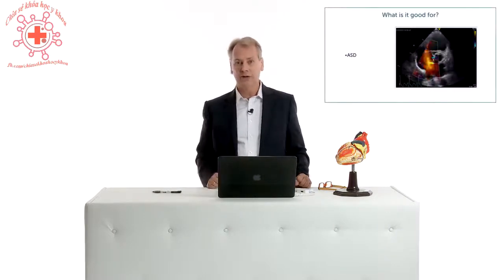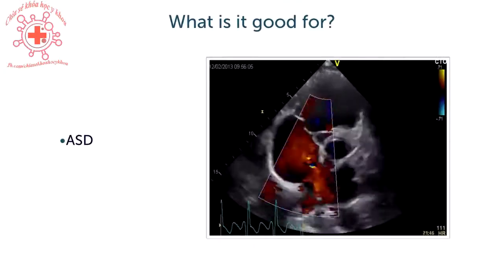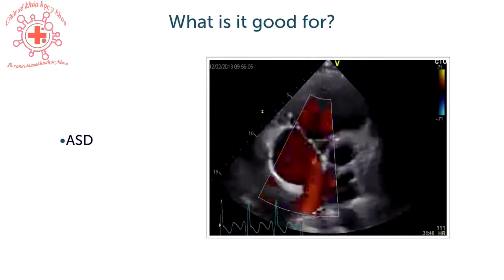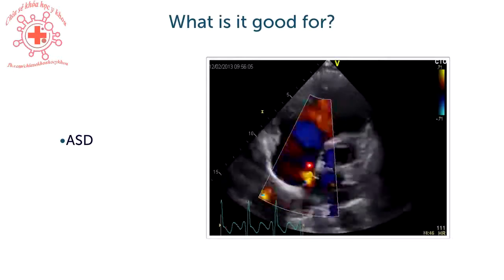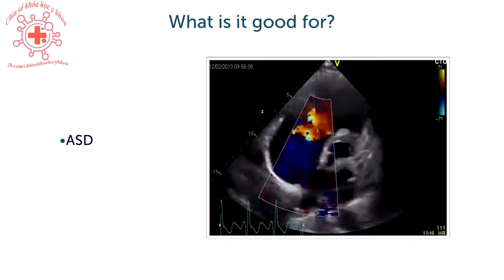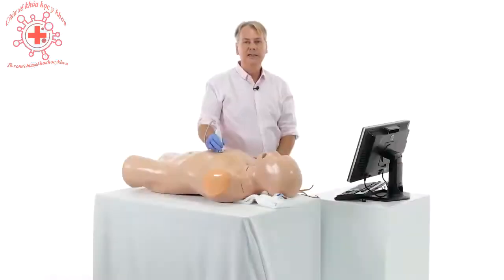You have to use modified views of the parasternal short axis view frequently. If you want to detect an ASD, it's better to move the transducer one or even two intercostal spaces further down so that you almost have an apical view — here you will have a very good orientation to the septum, which allows you to detect an atrial septal defect. As already mentioned, the short axis view is also ideal to identify the individual cusps of the aortic valve.